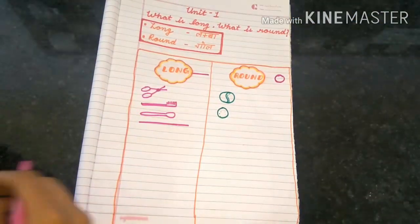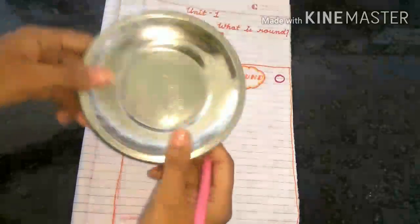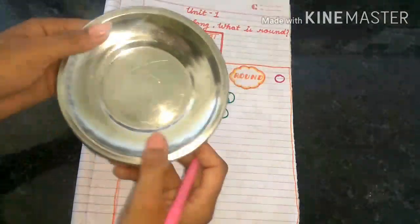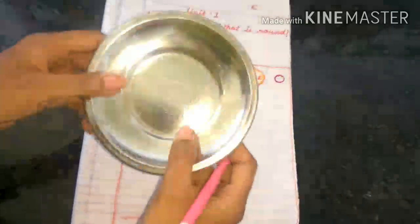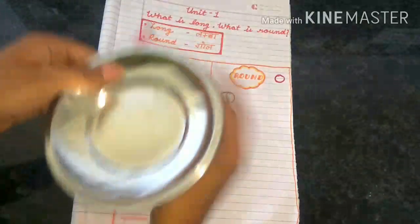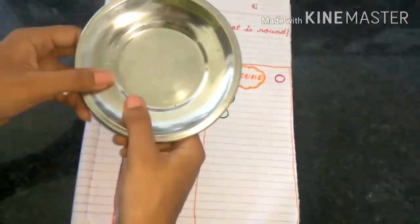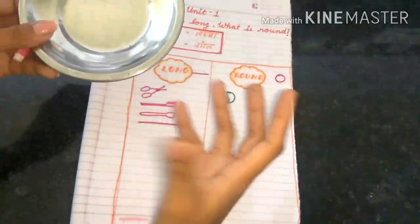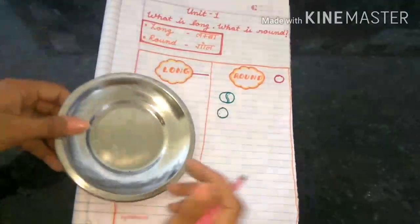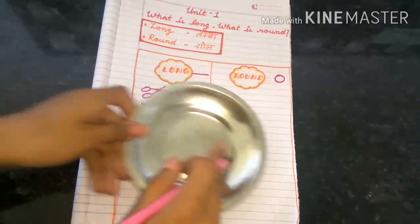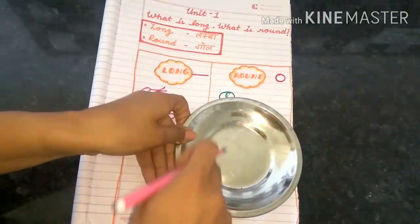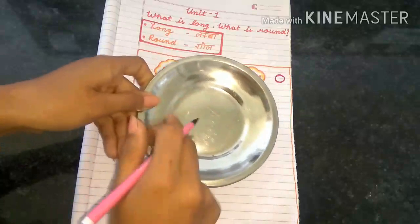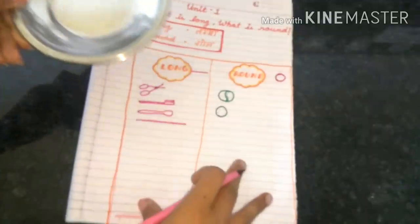Next item is this. This is a plate. So is it looking round or long? Round or long? You can see. Yes, it is round in shape. So let's draw it here.